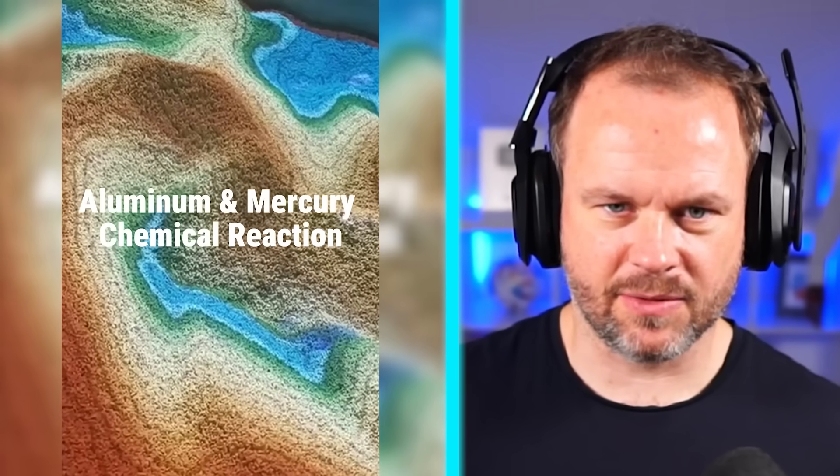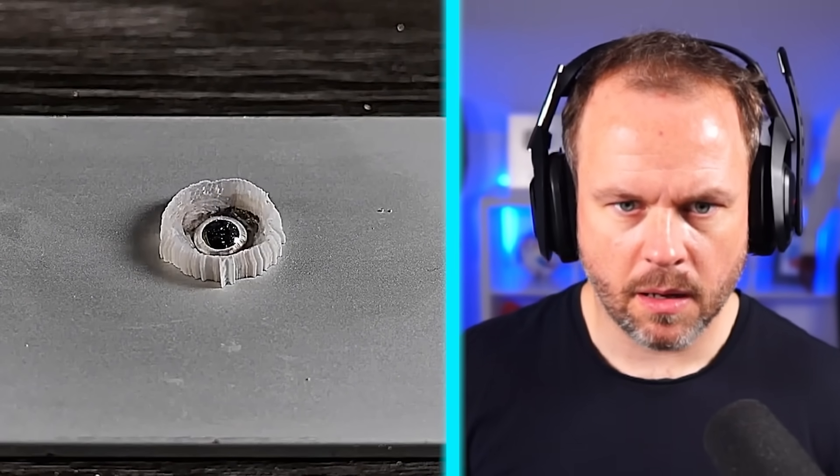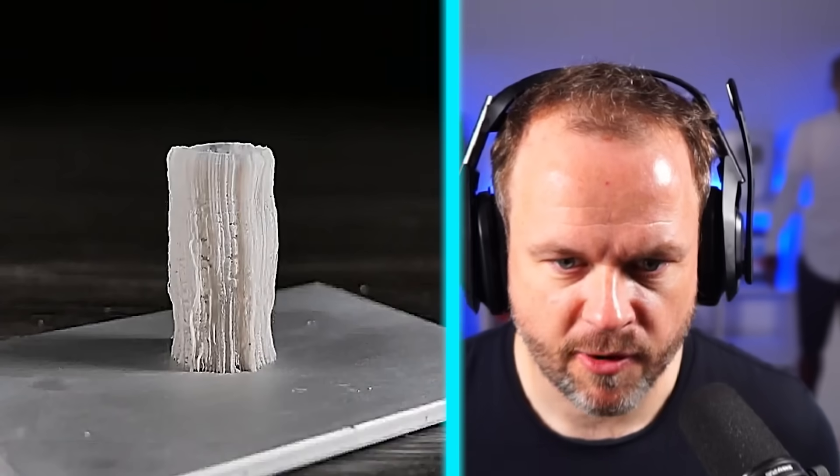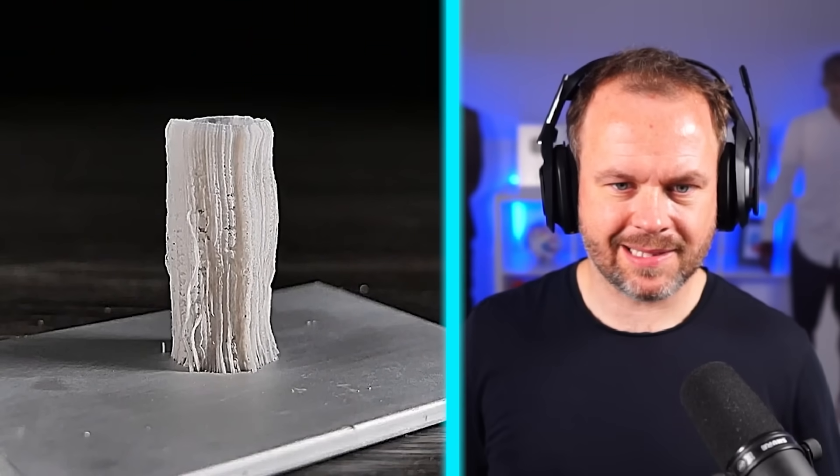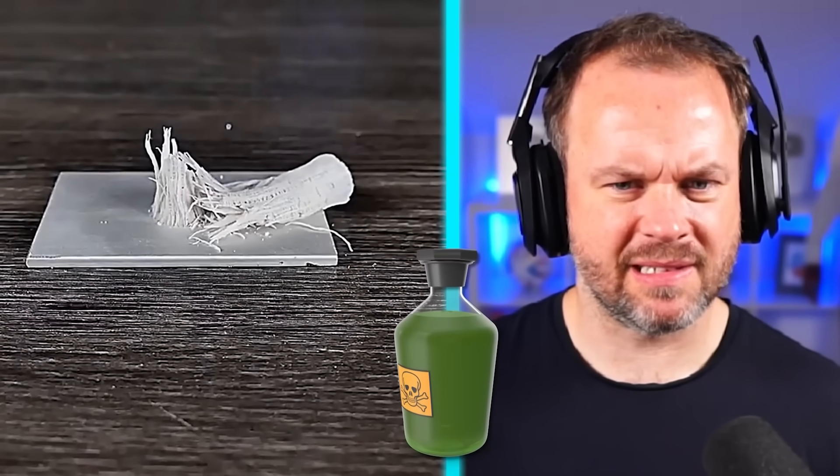All right, aluminum and mercury chemical reaction. It's like creating a skyscraper. What? No, you probably can't touch that either because mercury is poisonous isn't it? I believe, I think it is.